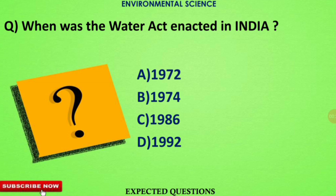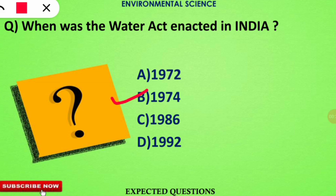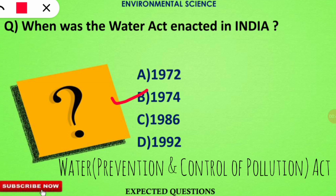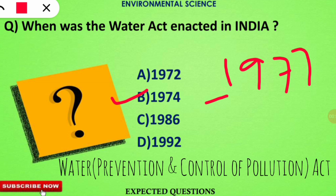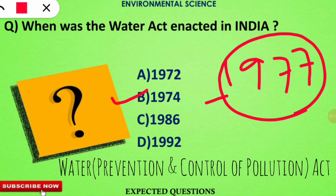The question is: when was the Water Act enacted in India? The correct option is B — 1974. This act is also called the Water Prevention and Control of Pollution Act, enacted in 1974. In 1977, the Water Cess Act was also enacted to levy tax on industries for regulating water rules.